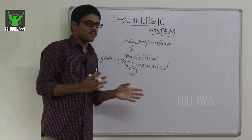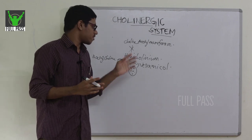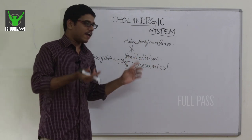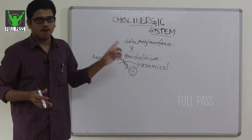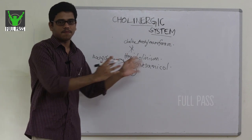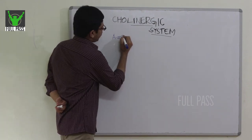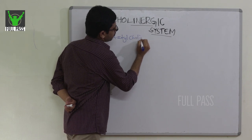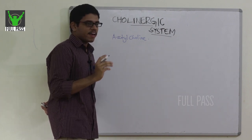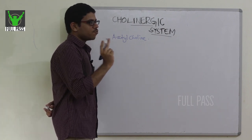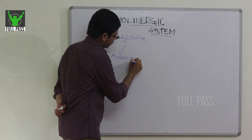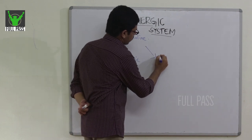In summary, acetylcholine is produced by choline acetyltransferase, which is blocked by hemicholinium, and the transfer of acetylcholine into vesicles is blocked by vesamicol — both compounds inhibit the functioning of acetylcholine. Acetylcholine, as the neurotransmitter in the cholinergic system, can exert its action via two receptors: muscarinic receptors and nicotinic receptors.